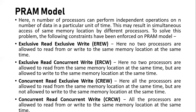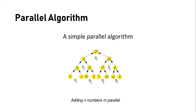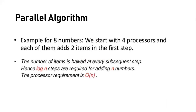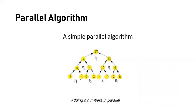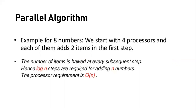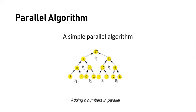A simple parallel algorithm example: adding N numbers in a parallel manner through a tree approach. For eight numbers, we start with four processors and each of them adds two items in the first step. You can see that at every subsequent step, the number of processors and items is halved. So log N steps are required for adding N numbers, which gives a time complexity of O(log N).